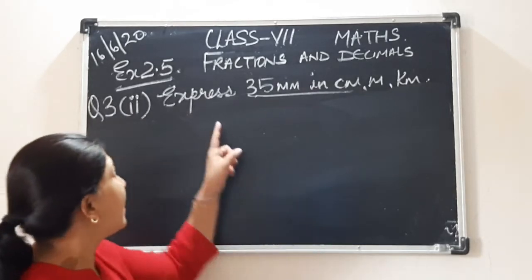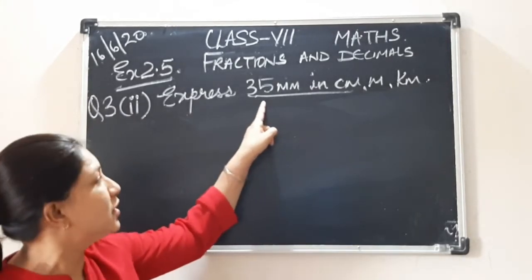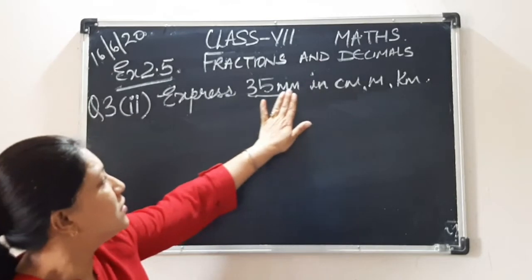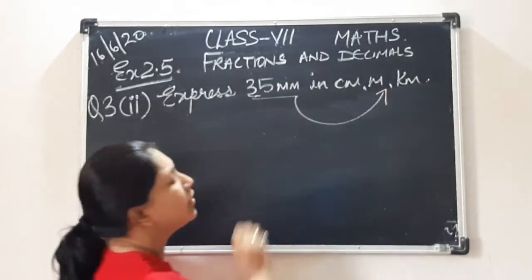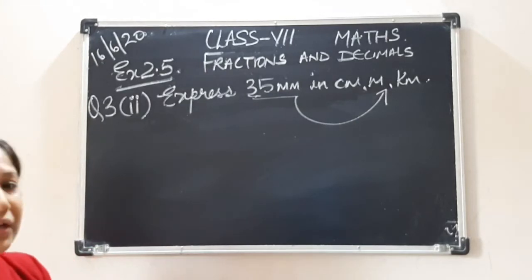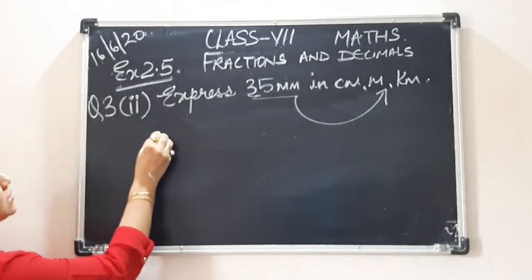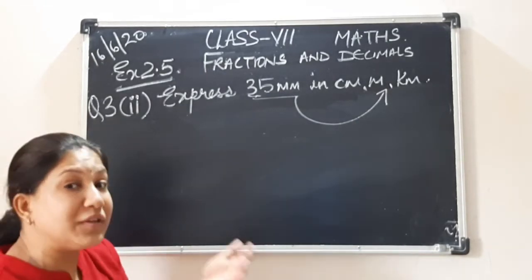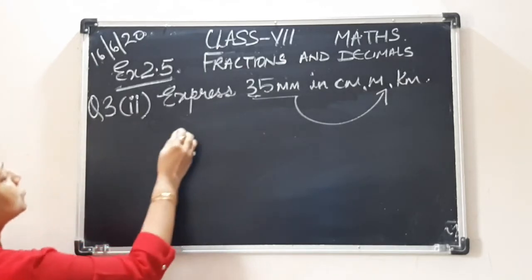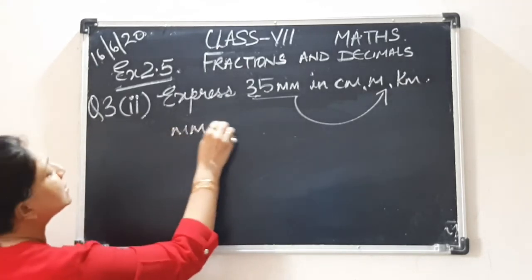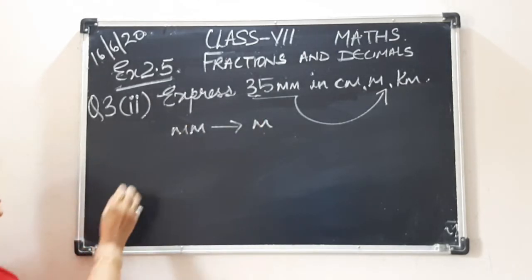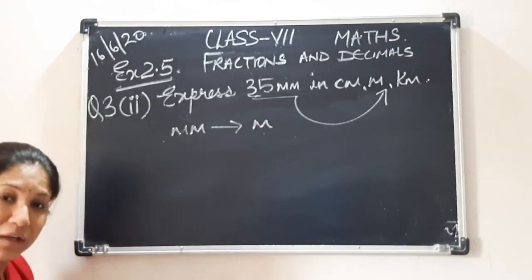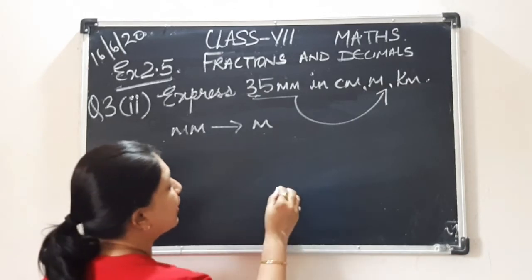Okay children. We have learned how to convert 35 millimeters in centimeters. Now we will learn how to convert it into meters. Let us do. First step is to write down the units in which it is given and asked. So it is given in millimeters and asked in meters. The second step is to write down the unit scale.